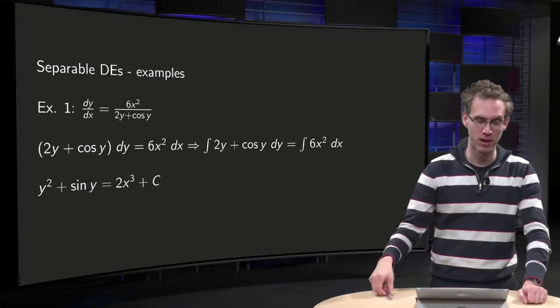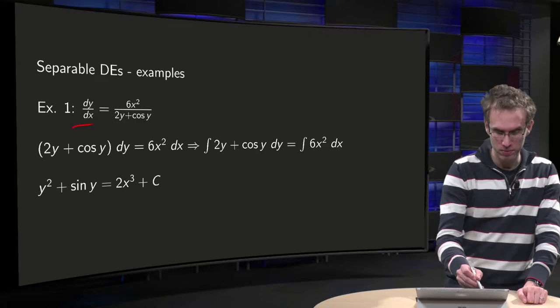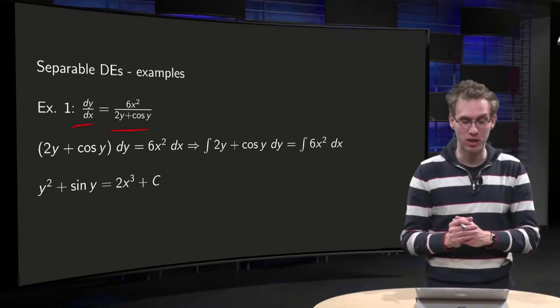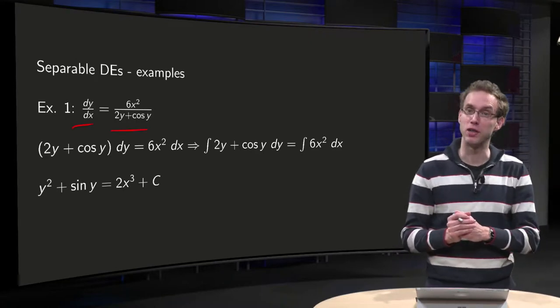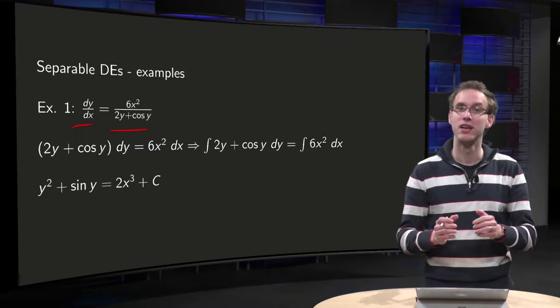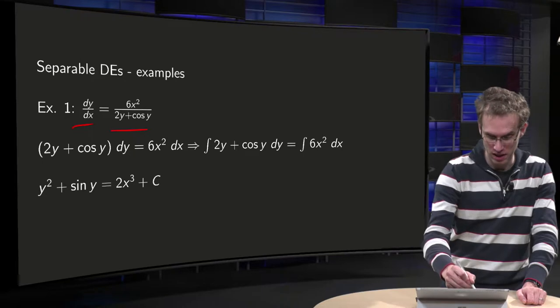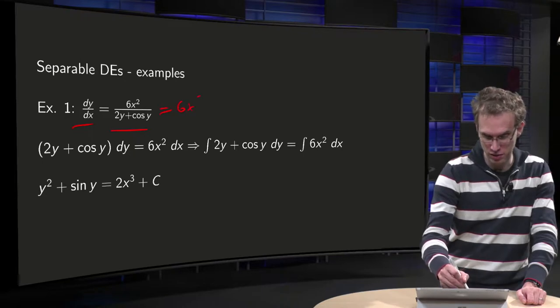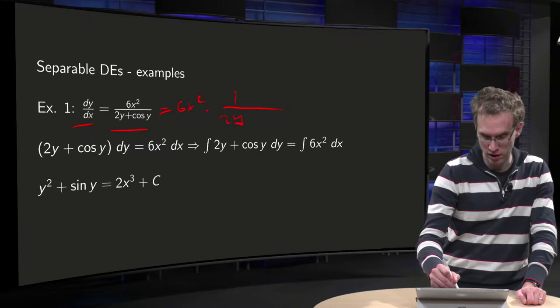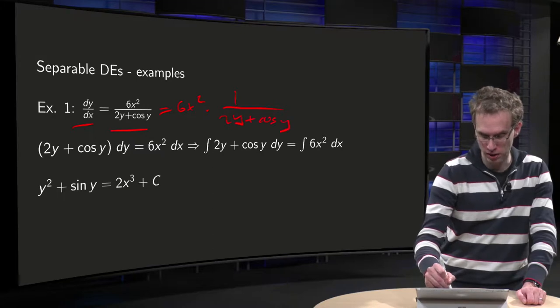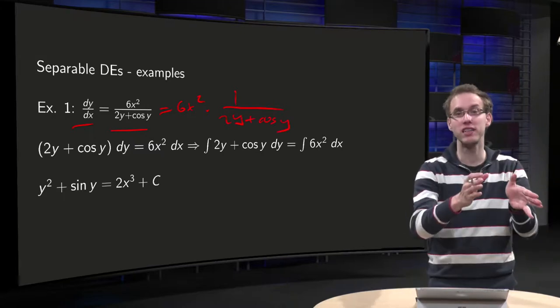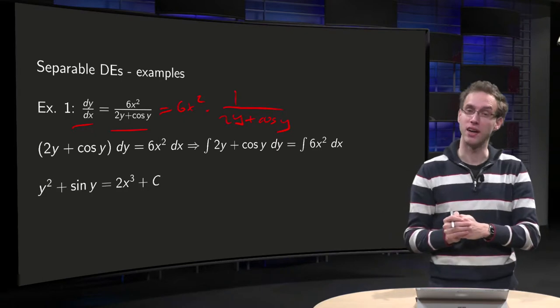First example: dy dx equals 6x squared divided by 2y plus cosine y. It is a separable differential equation because you can write this as 6x squared times 1 over 2y plus cosine y. So we have a function of x times a function of y on the right hand side.